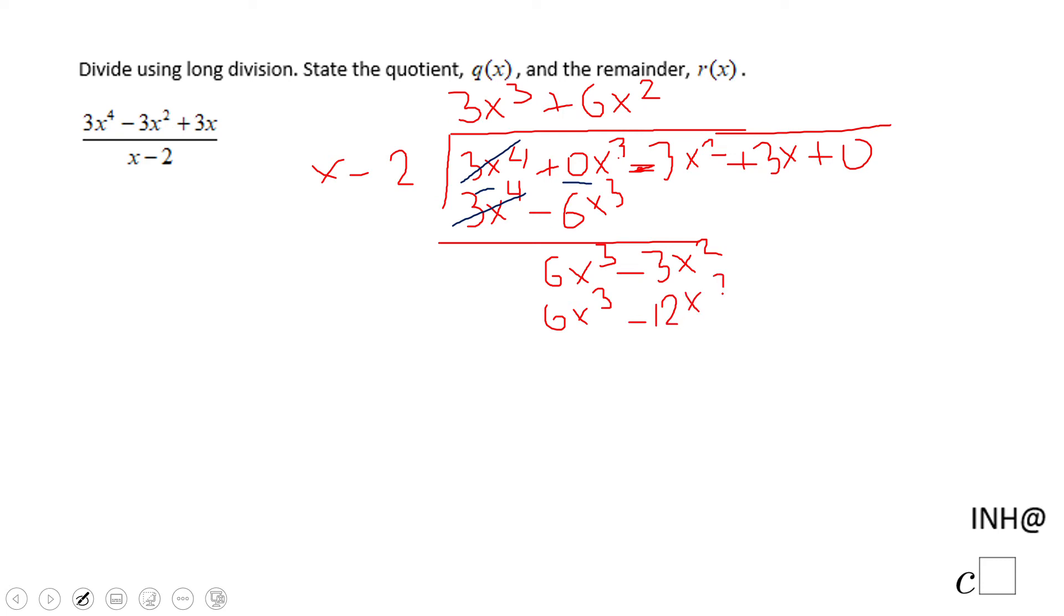And again, we're going to subtract, and the 6x³ cancel out, which we expected. And then we have negative 3x² minus negative 12x², that will be positive 9x², plus 3x. And what do you multiply x by to get 9x²? That will be 9x.